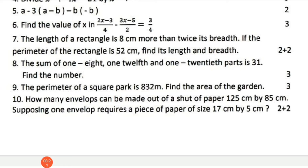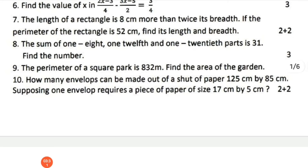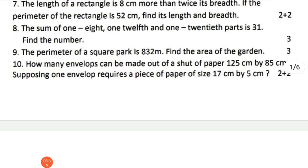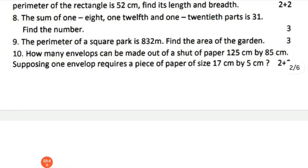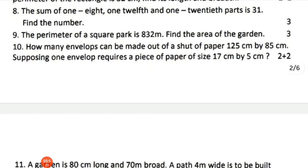The next question: the sum of 8 plus 1 plus 8 plus 1 plus 12 plus 1 to a 20th part is 31 — find the number. The next question: the perimeter of a square park is 832 meters — find the area of the garden. How many envelopes can be made from a sheet of paper 125 centimeters by 85 centimeters, supposing one envelope requires a piece of paper of size 17 centimeters by 5 centimeters?